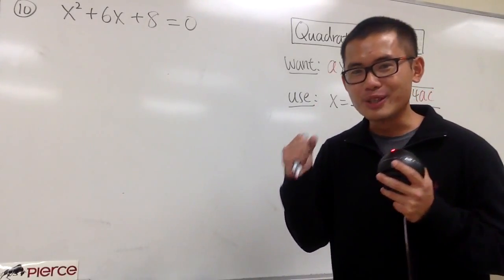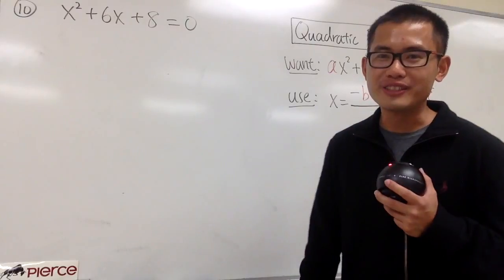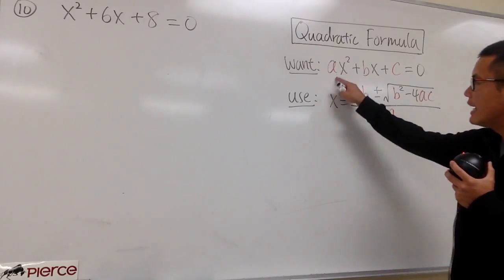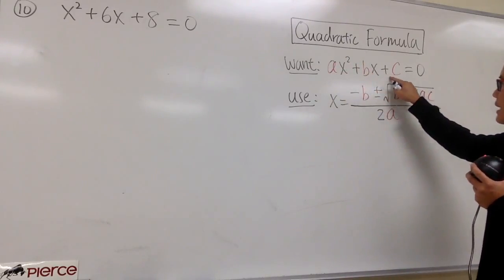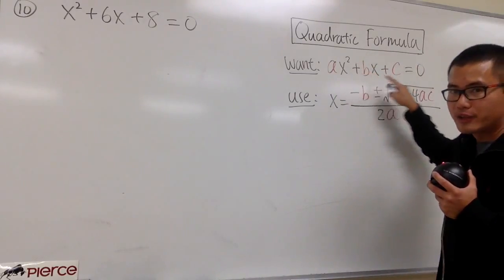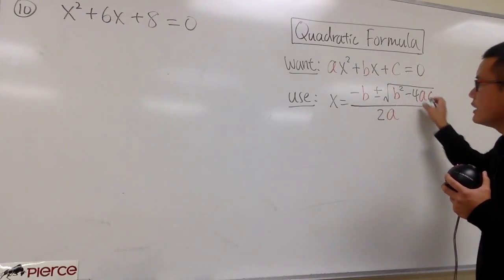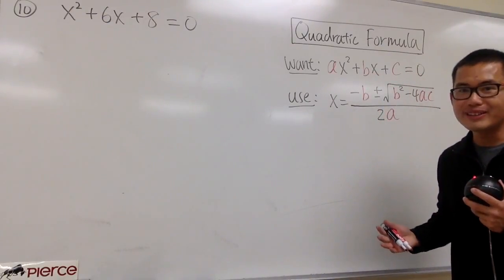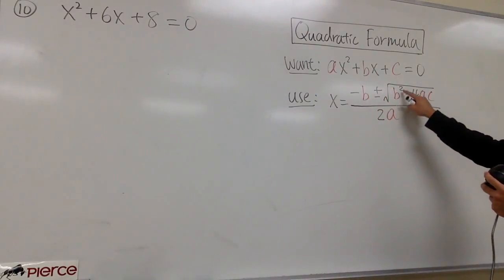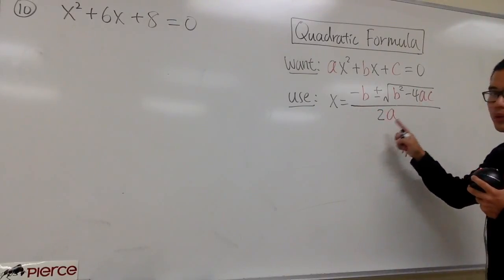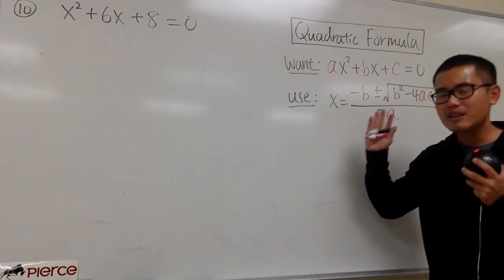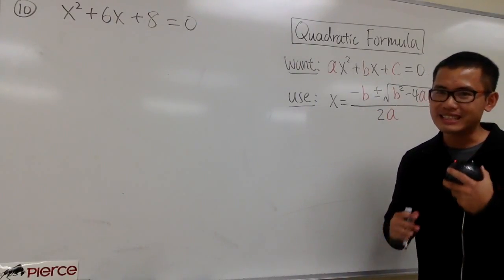In this video, I'll show you guys three examples on how to use the quadratic formula to solve quadratic equations. First of all, we want the equation to be in the standard form, and that is ax squared plus bx plus c equal to zero. Once we have this, we can just plug in the abc values into this formula. x is equal to negative b plus minus square root of b squared minus 4ac, all over 2a. This formula is wonderful because it will solve any quadratic equation for you, including the ones that are not factorable.